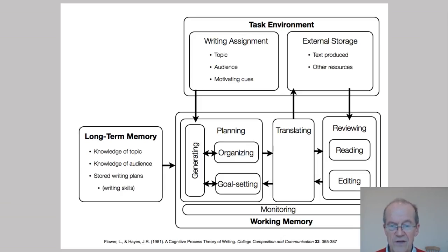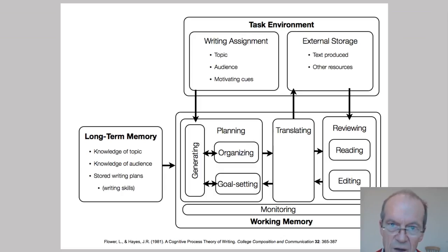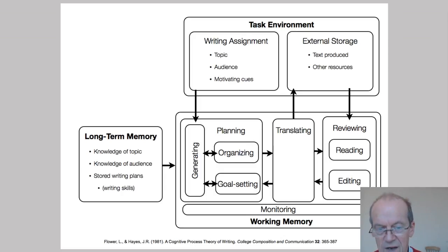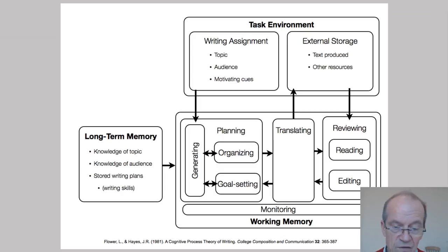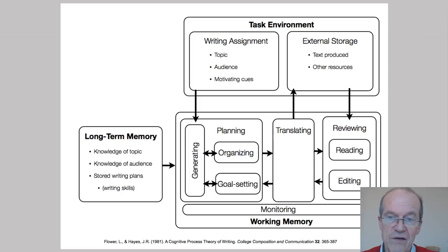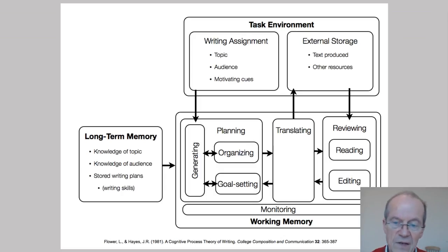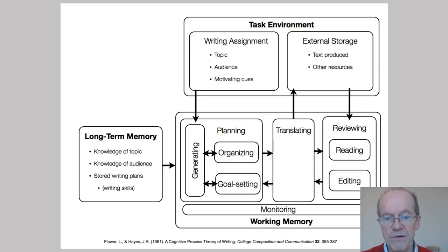Planning is everything you do before you actually write: you organize, collect your ideas, study the writing assignment and task environment, and try to find the necessary information in your long-term memory — your knowledge of the topic, what you know about your audience, writing plans, writing skills, etc. You collect all kinds of information necessary to organize ideas and define the goals you want to achieve with the paper. This is everything which goes on before the actual writing.